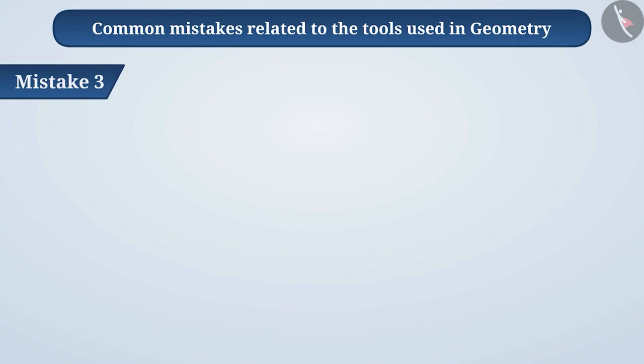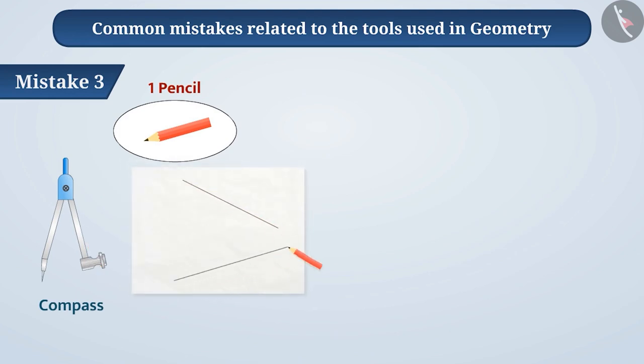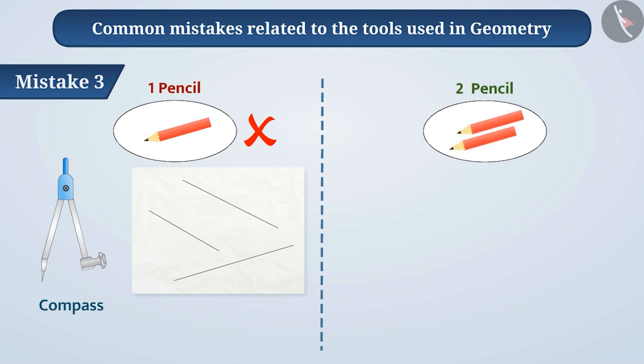Mistake 3: Students often use the same pencil for the compass and to draw lines. Keep in mind that if you have two pencils, one pencil will always remain fixed to the compass and the other can be used to draw lines or curves and mark points, which will reduce the wear of the pointed end of the pencil and at the same time, one can overcome the difficulty of placing and removing the pencils in the compass.